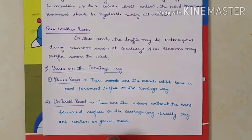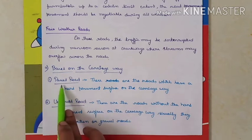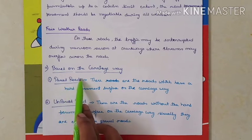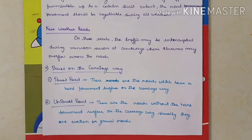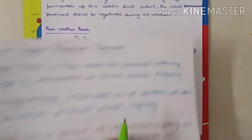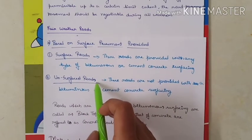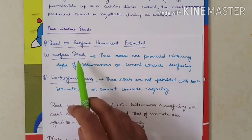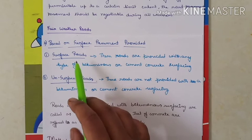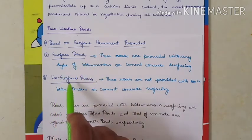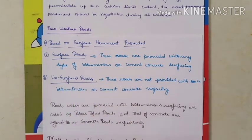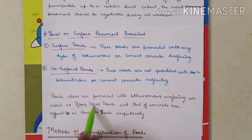Based on the carriageway, the road system is divided into paved road and unpaved road. Roads with a hard pavement surface on the carriageway are called paved roads; roads without — such as earthen or gravel roads — are called unpaved roads. Based on the pavement provided, roads are classified into surface roads and unsurface roads. Roads provided with bituminous or cement concrete surfacing are called surface roads; those without such surfacing are unsurface roads. Roads with bituminous surface are also called black-topped roads.